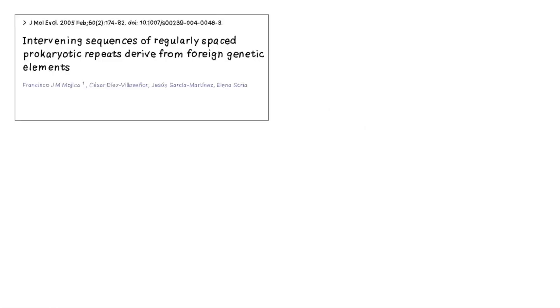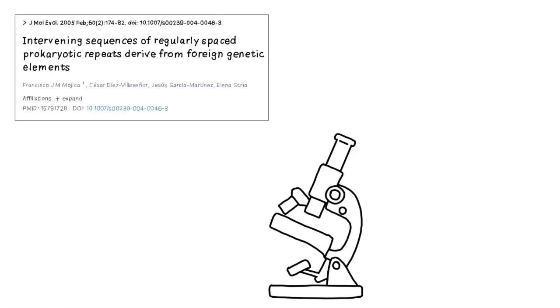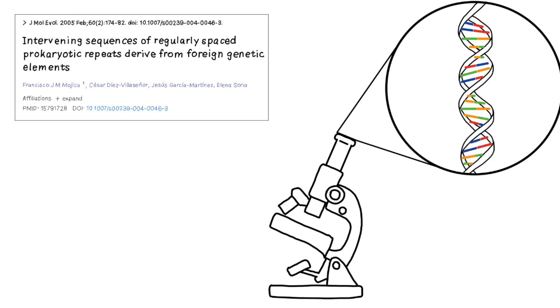In 2004, Francisco Mojica decided to investigate the origin of CRISPR in his paper, 'Intervening Sequences of Regularly Spaced Prokaryotic Repeats Derive from Foreign Genetic Elements.' He analyzed 4,500 CRISPR spacers from 67 strains consisting of 36 genera of prokaryotes to investigate the origins of such intervening sequences and the relationship they had with foreign DNA such as bacteriophages and conjugative plasmids.